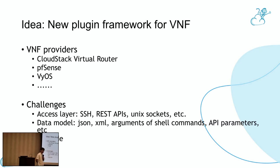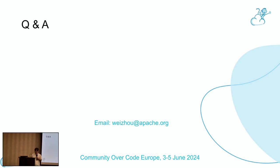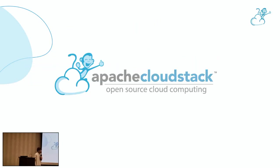There are some challenges because router operating systems have different access methods — some are managed by SSH, some have a good API, and some can be accessed by Unix socket. For the data model, it can be arguments of a shell command, API parameters, or JSON or XML. So it's a big challenge. Upgrades can also be a problem. The CloudStack Collaboration Conference will be held in Madrid this November. Any questions?